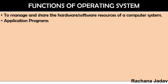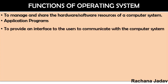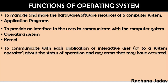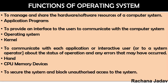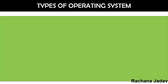The functions of the operating system include managing hardware and software application programs. The OS provides an interface between the user and the computer system. The operating system kernel communicates with each application and the interactive user about the status of operations and any errors. It also manages CPU, memory, devices, and security — it blocks unauthorized access based on the permissions given.